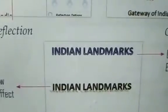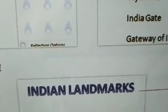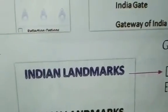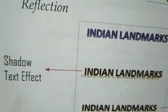Here you can see the effects shown on 'Indian Landmarks'. This is the outline text effect — a border drawn around the text. Next is shadow text effect, where a shadow appears under the text.